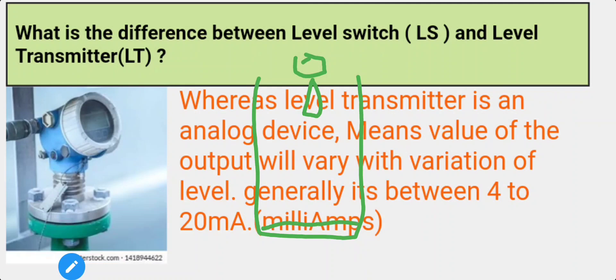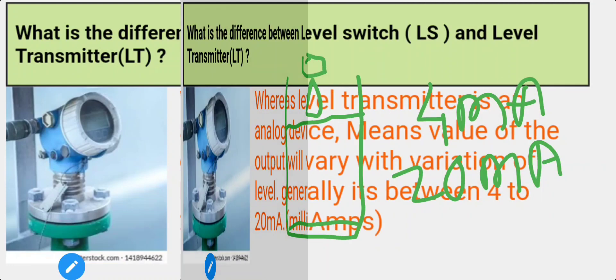Like if there is a low level, it will give you 4 milliamps output so that in control system we will get the value as zero. Or whatever its high value like this, then the transmitter will give you 20 milliamps.